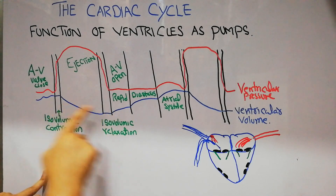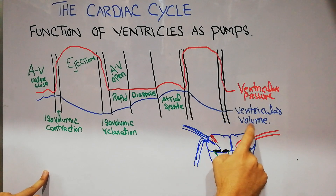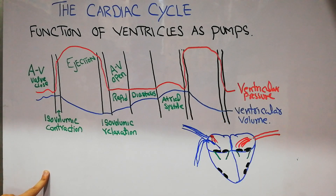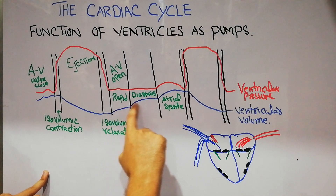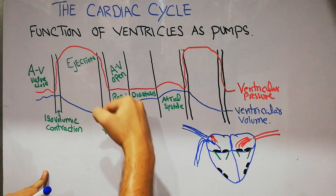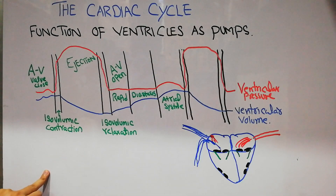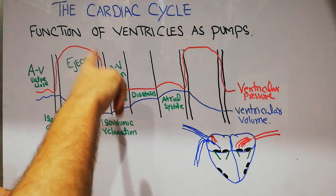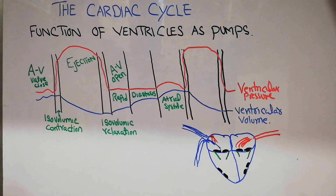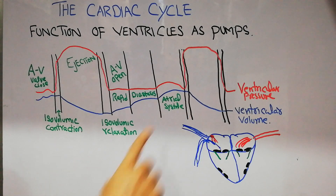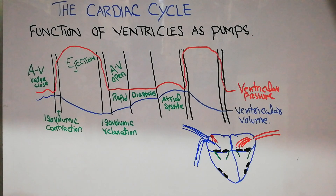The ventricular volume graph shows the amount of blood in the ventricles growing slowly and gradually through three steps: the first third is rapid filling, the second third is diastasis, and the third stage is atrial systole. After atrial systole, the atrioventricular valves close.